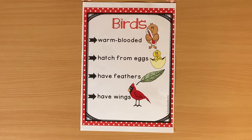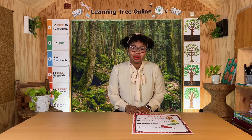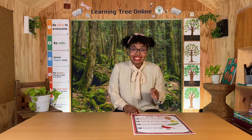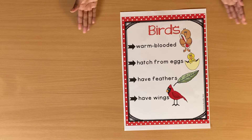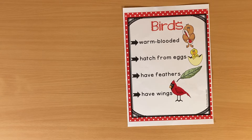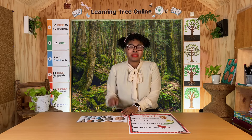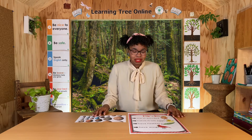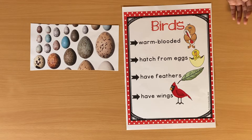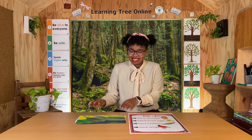Next, let's look at birds. Birds are a bit easier to identify because their features are so distinct and easy to see. Birds, like people and other mammals, are warm-blooded. And unlike mammals, they come from an egg. There are many different types of bird eggs, but bird eggs usually have a hard shell that the babies crack open when they're ready to come out. Birds also all have feathers — these feathers can look very different. Can you guess what bird this is? It's a parrot.